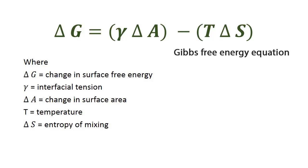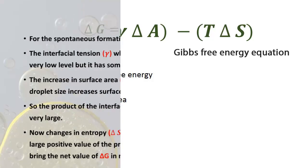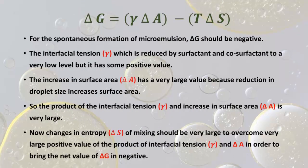Surface area will increase with decrease in droplet size. T is the temperature, and Delta S is the entropy of mixing. For the spontaneous formation of microemulsion, Delta G should be negative. The interfacial tension is reduced by surfactant and co-surfactant to a very low level, but it has some positive value. The increase in surface area has a very large value because reduction in droplet size increases surface area, so the product of interfacial tension and increase in surface area will be very large.